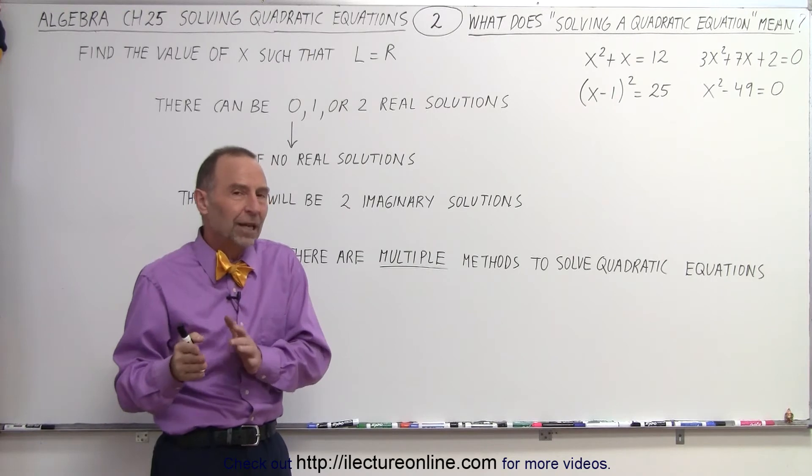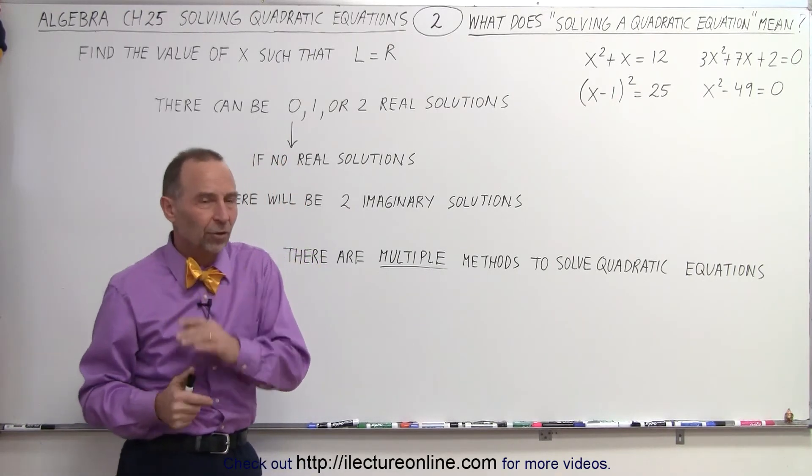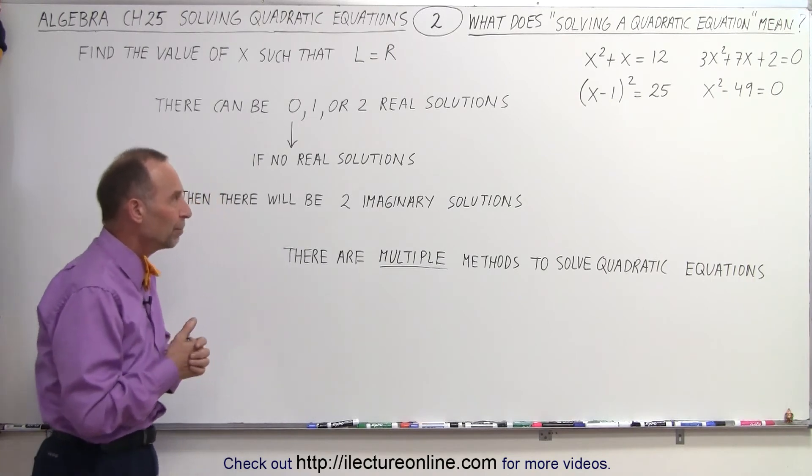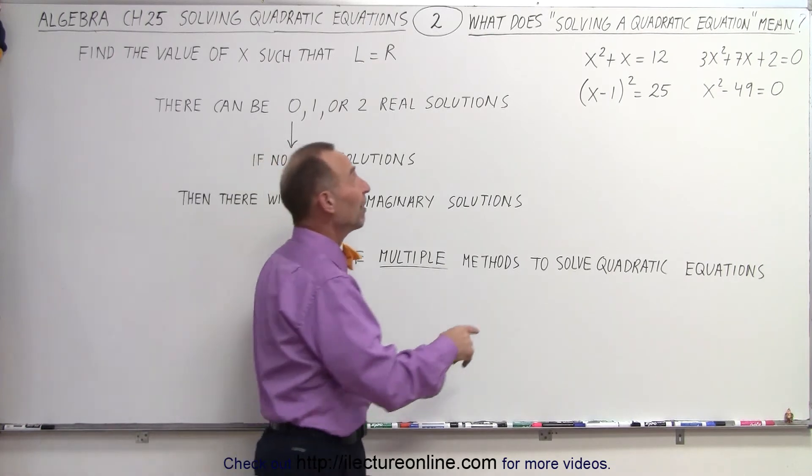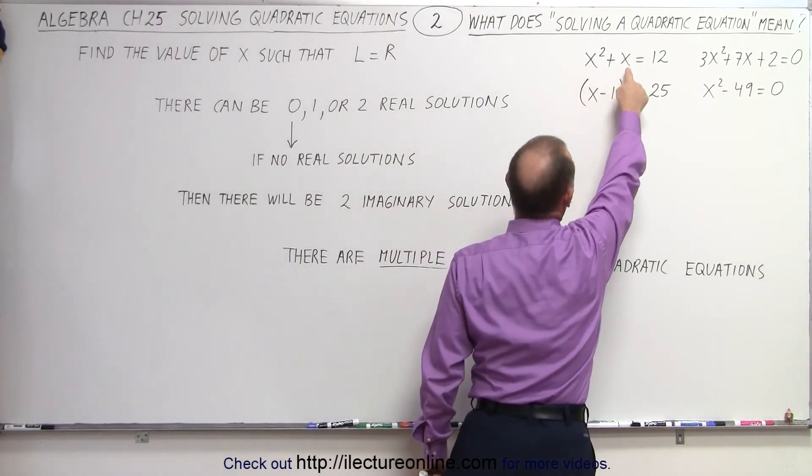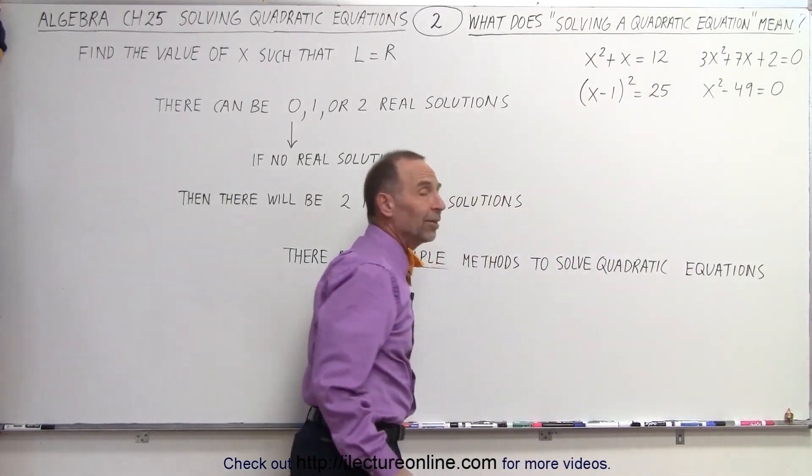But you can see that in some cases it might be easier or faster to use one method over the other method, so you can find out for yourself what methods are best. But again, solving quadratic equations simply means finding the value for the unknown variable, in this case x, that will make the left side equal the right side.